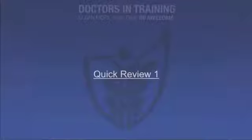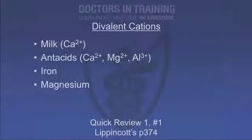Now let's review high-yield points covering tetracyclines and aminoglycosides from Quick Review 1. Question 1: What should you never take with tetracyclines? You should not take divalent cations — no milk, antacids, iron-containing preparations, or magnesium. All of these will interfere with gut absorption of tetracycline.